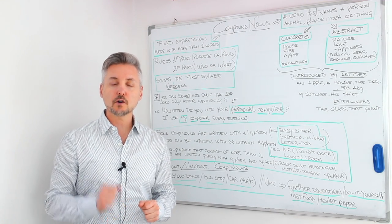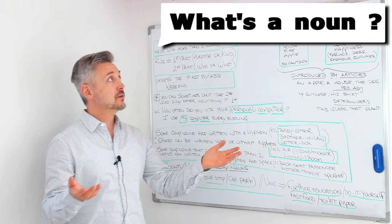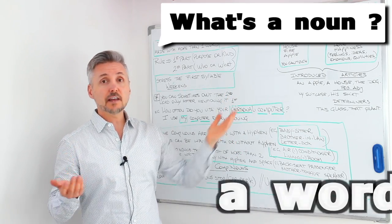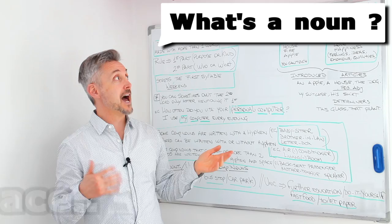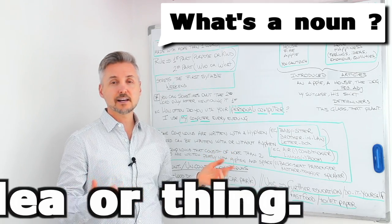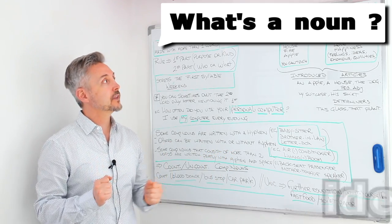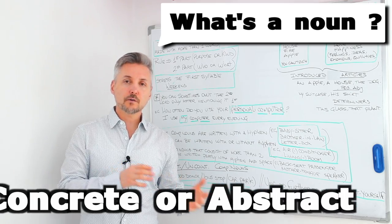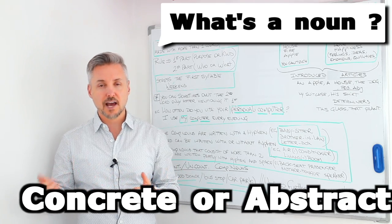Right, we're going to talk about compound nouns. A noun is a word that names a person, an animal, a place, an idea, or a thing. There can be concrete or abstract nouns.